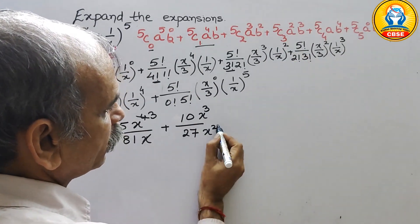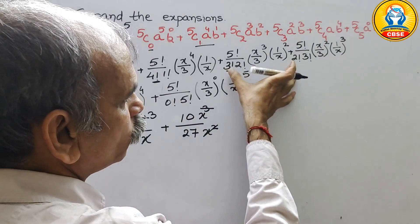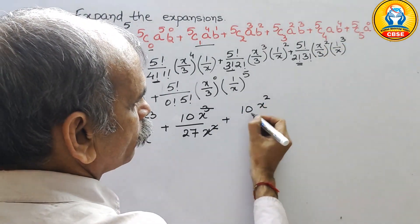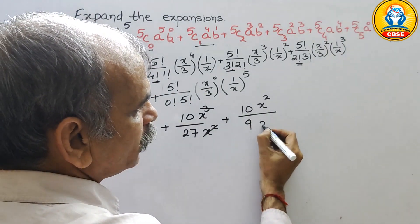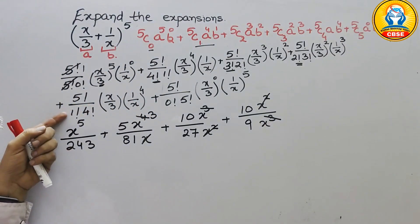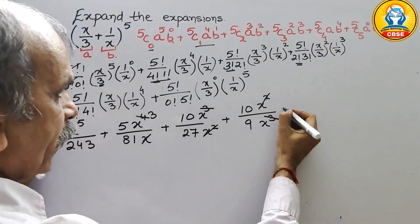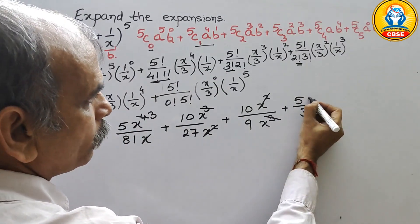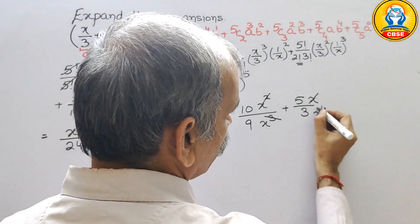So we write 10 divided by 3 cubed which is 27, times x cubed, times x squared from b squared — so those cancel and only x remains. Next, 5C3 also gives 10, so we get plus 10 times x squared divided by 3 squared which is 9, times x cubed from b cubed — those cancel. So we have 10/9. Next, 5C4 gives 5, so we write 5 divided by 3, times x, divided by x to the power of 4, which reduces the power to x to the power of 3.